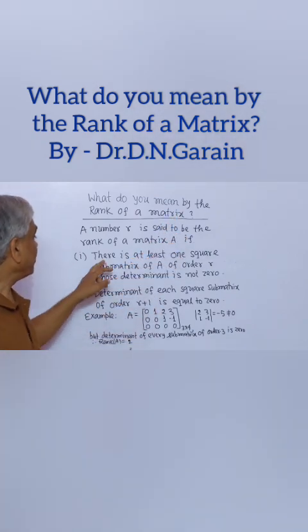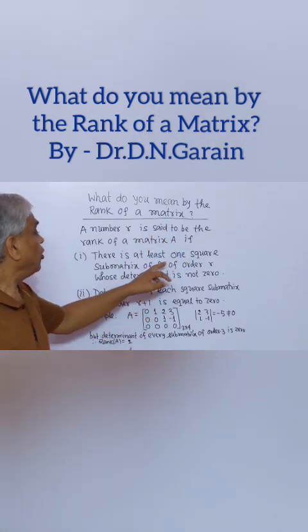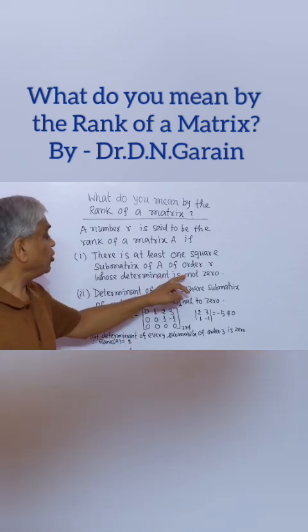Number one, there is at least one square sub-matrix of A of order small r whose determinant is not zero.